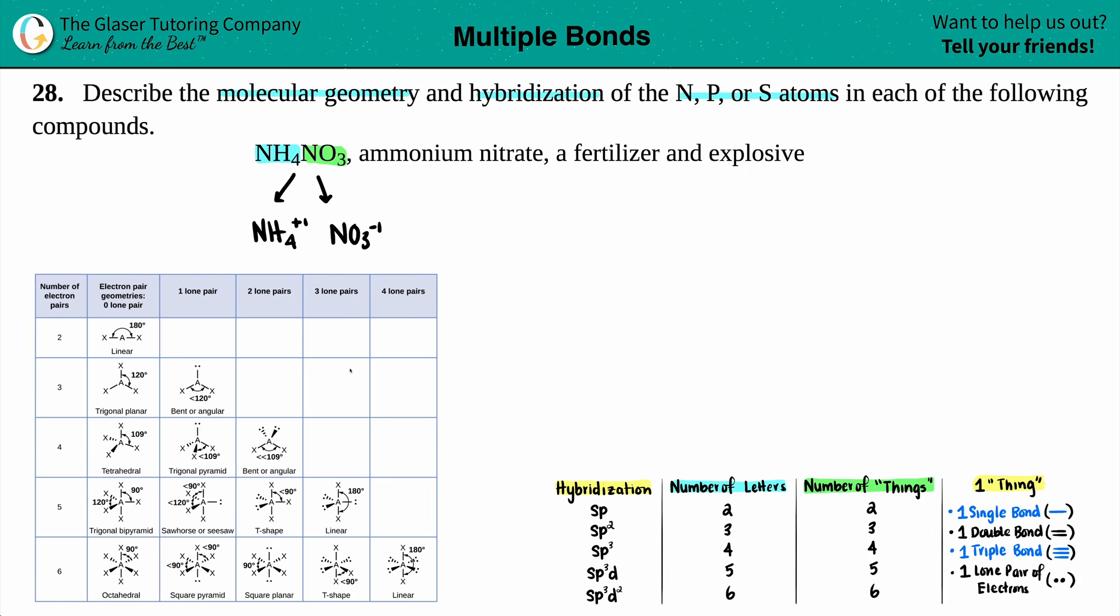Let's work on the NH4 plus first. The center atom is going to be the nitrogen in this case. Hydrogen is never going to be the central atom because it can only make one bond. I got nitrogen in the middle surrounded by four hydrogens: one, two, three, and four. Let's do the same thing for the other one. Nitrogen is less electronegative than oxygen, so I'm gonna have the nitrogen in the middle surrounded by three oxygens. I'll put them on the sides and the bottom.